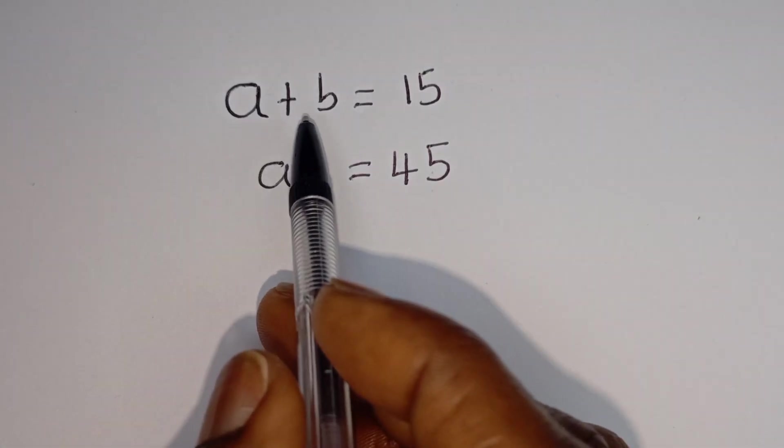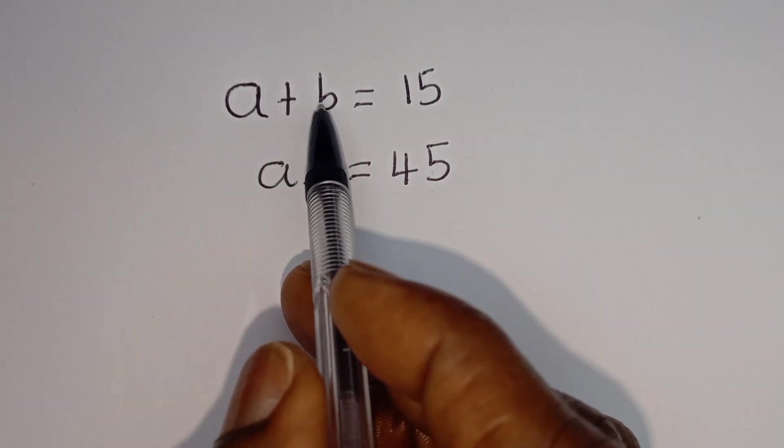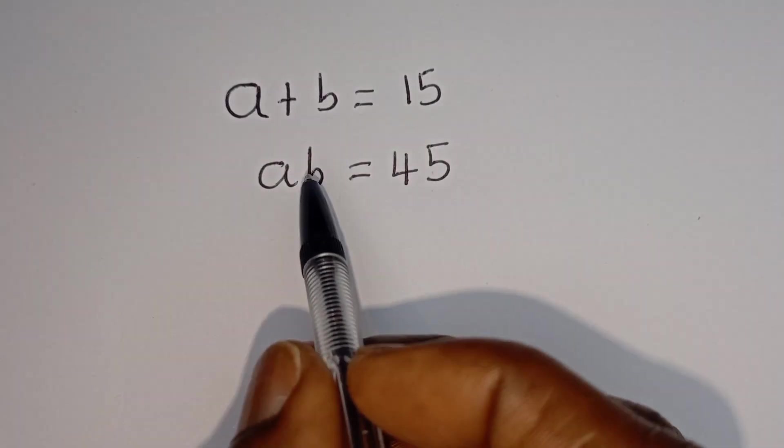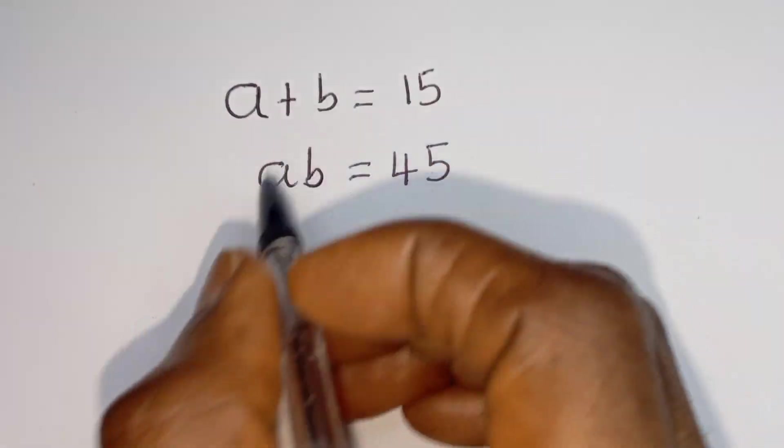Hello, how to solve for A and B in this equation? A plus B is equal to 15, and AB is equal to 45.